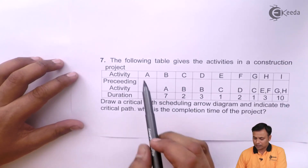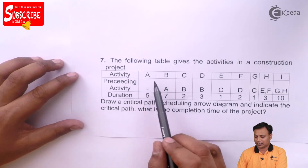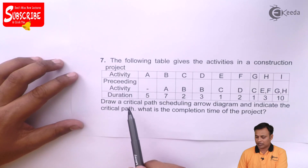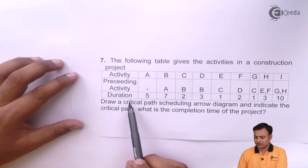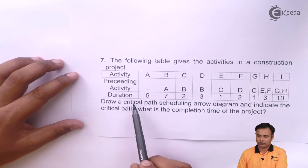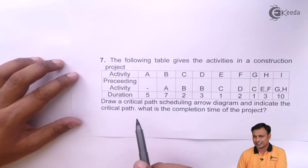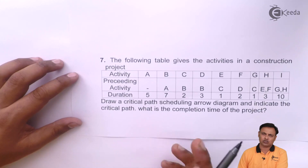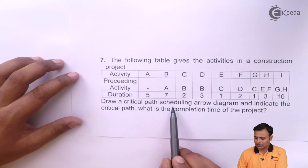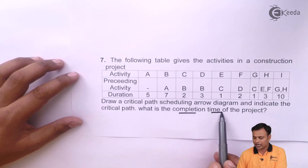Problem number seven: the following table lists the activities in a construction project. We have activities A to I, with preceding activities and durations. In problem number six we didn't have the duration; from problem number seven we have the duration, which can be in days, months, weeks, years, or seconds. Draw a critical path scheduling arrow diagram, indicate the critical path, and find the completion time of the project.